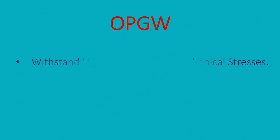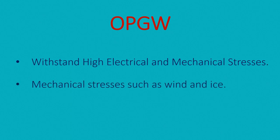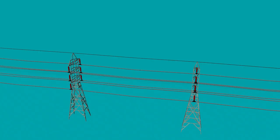OPGW performs the following two functions: protection of high voltage power lines from lightning strokes, and provision of telecommunication services between generating stations, substations, and load dispatch centers through the use of high speed fiber optic technology.